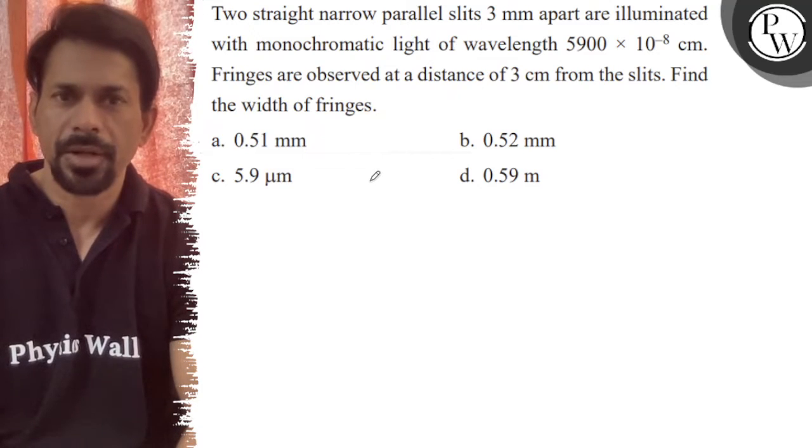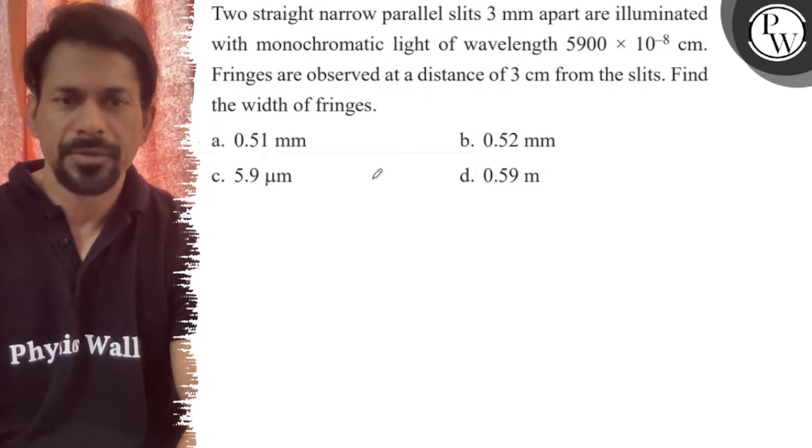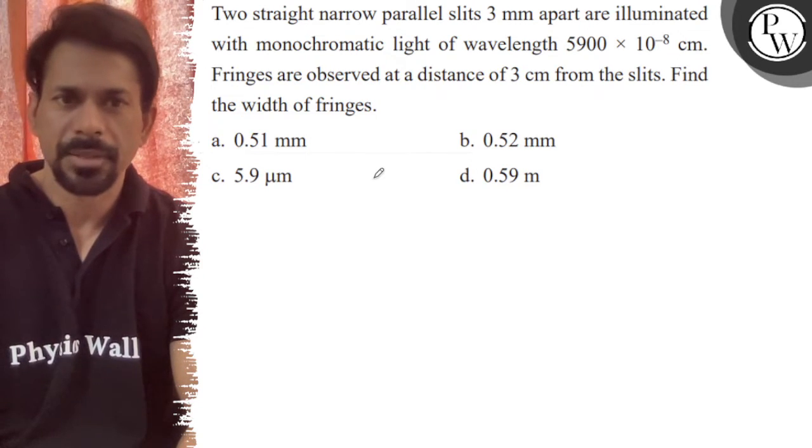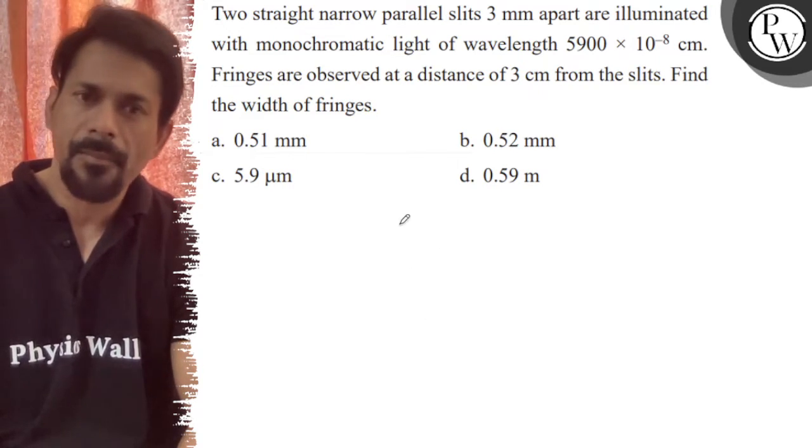Hello, let's see the question. Two straight narrow parallel slits 3 mm apart are illuminated with a monochromatic light of wavelength 5900 × 10^-8 cm. Fringes are observed at a distance of 3 cm from the slits. Find the width of the fringes.